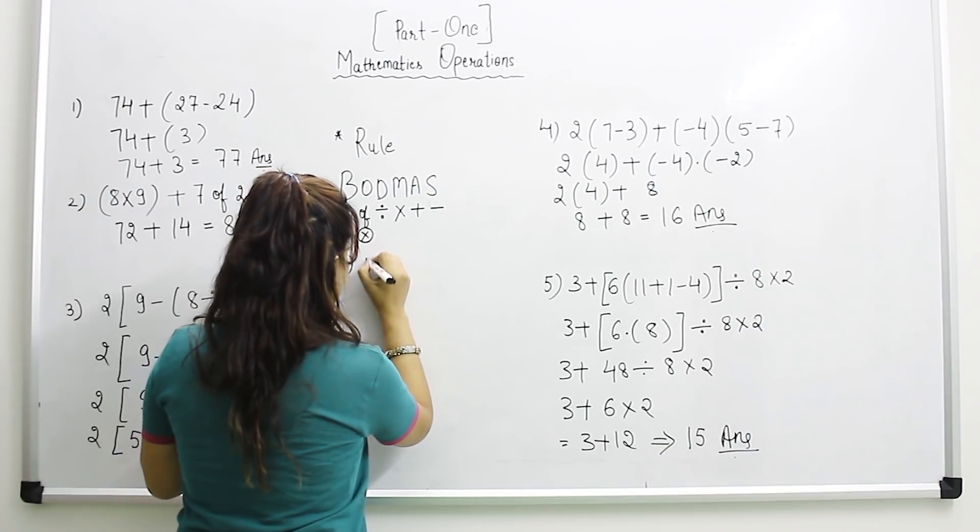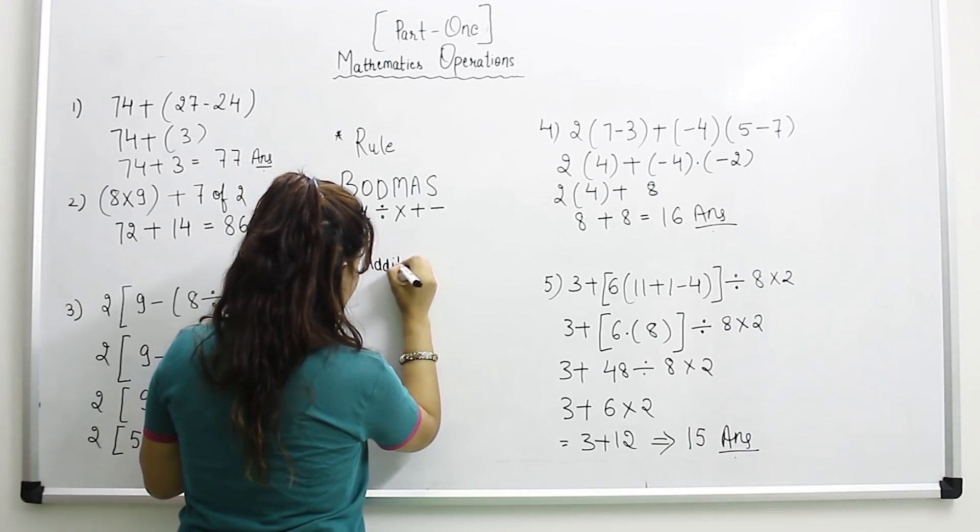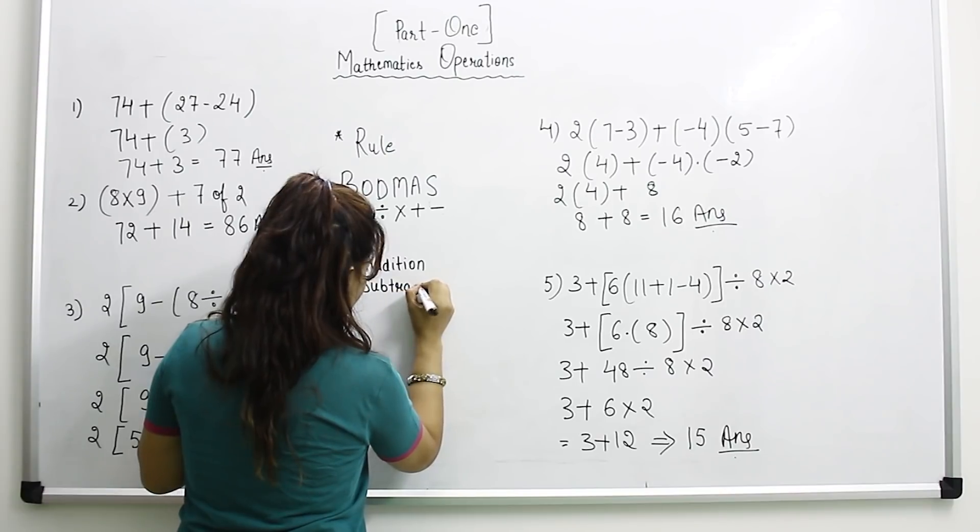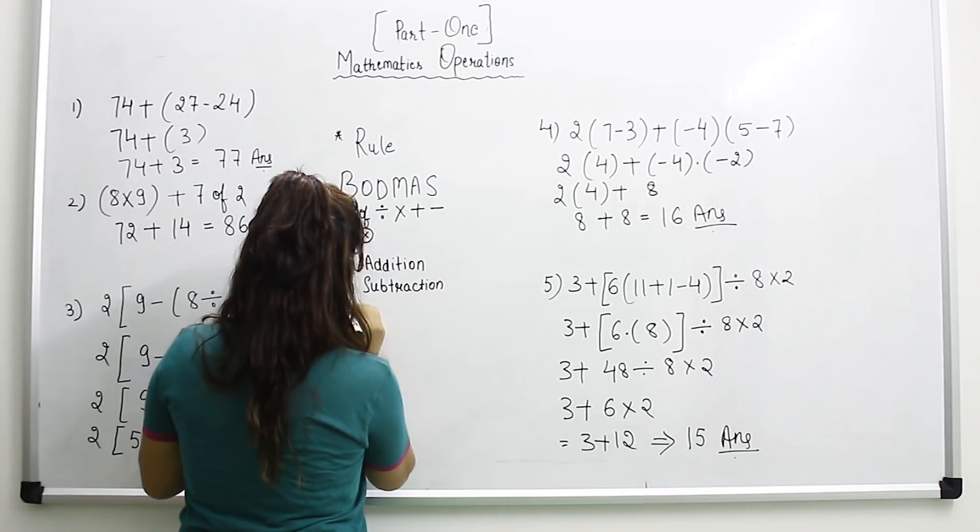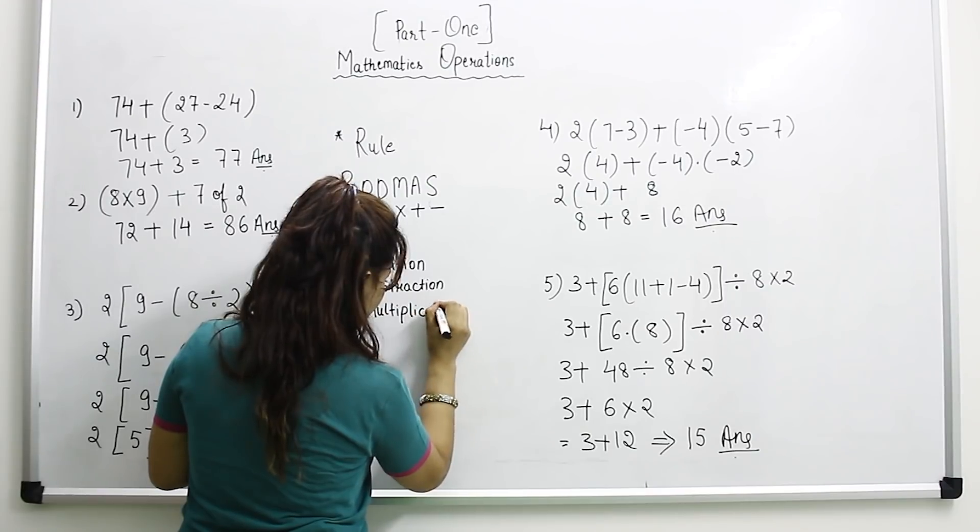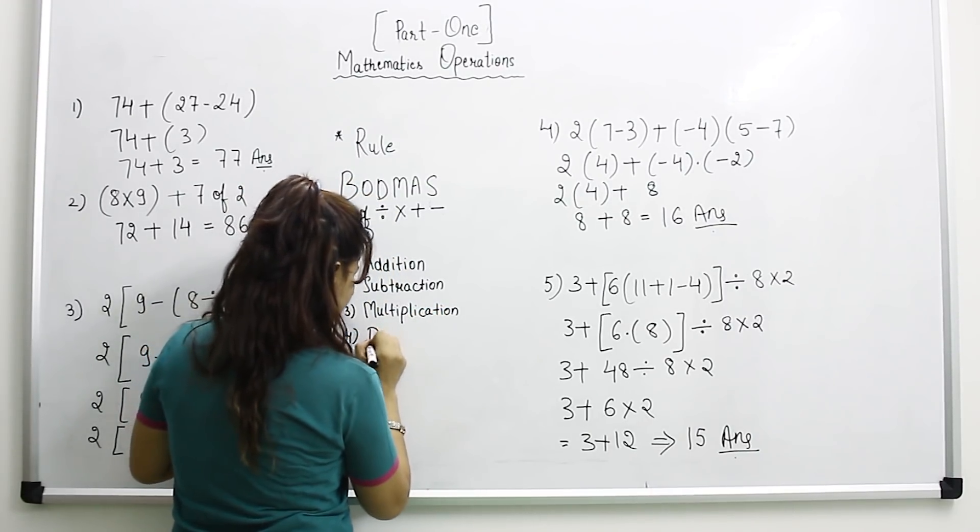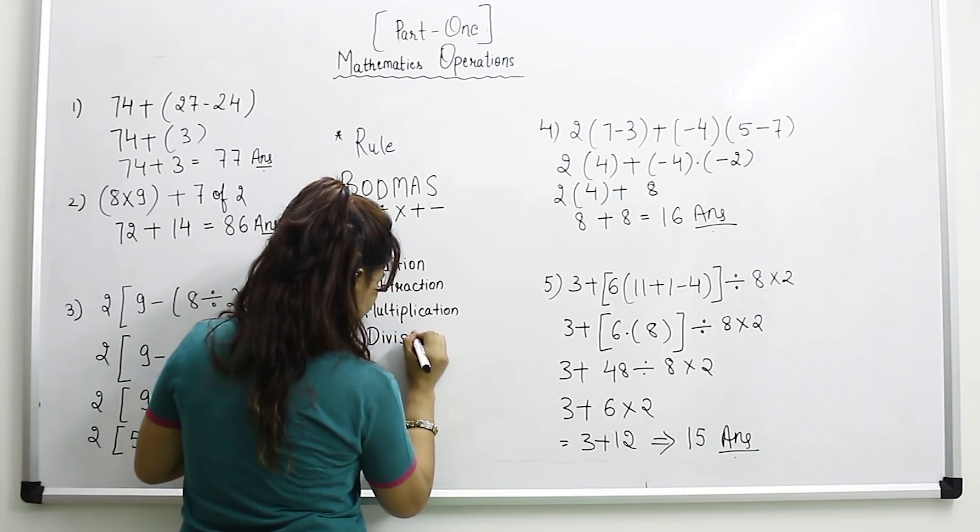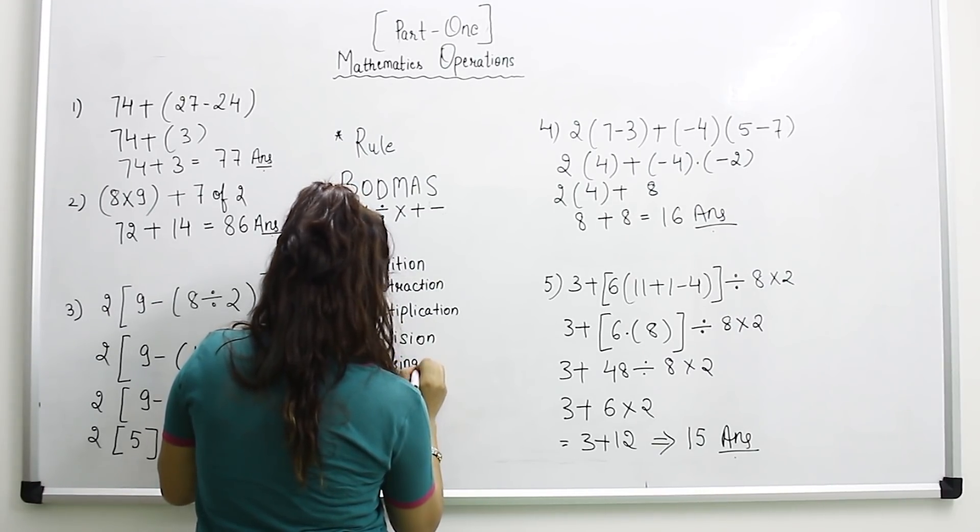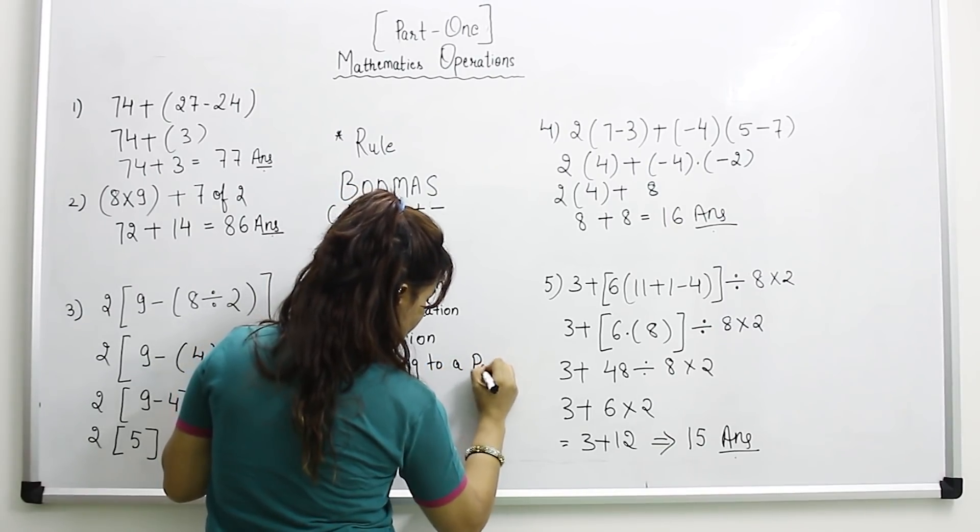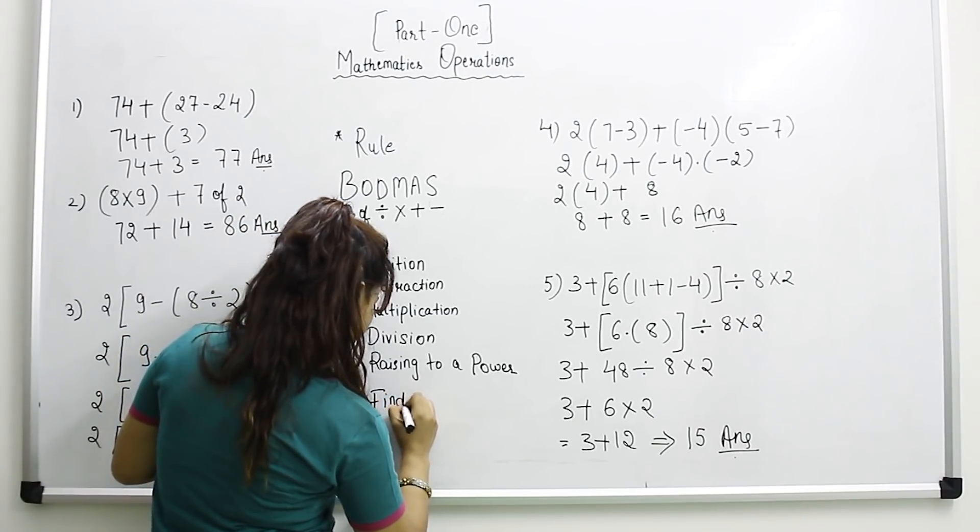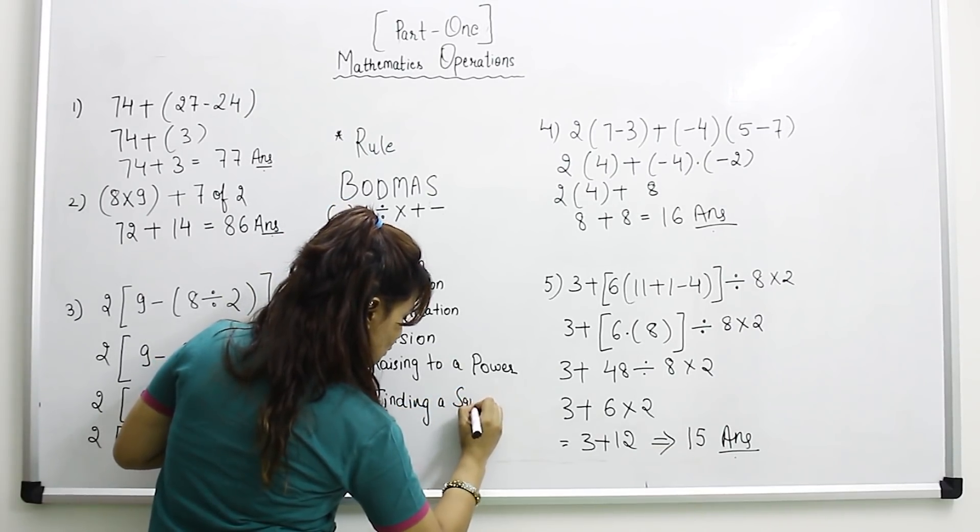First is addition. Second is subtraction. Third is multiplication. Fourth is division. Fifth is raising to a power. And the last one is finding a square root.